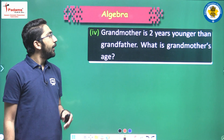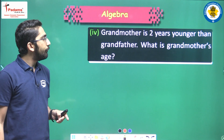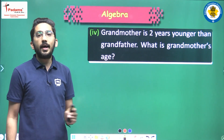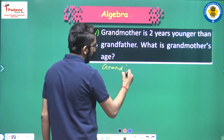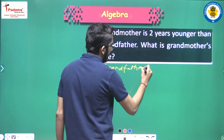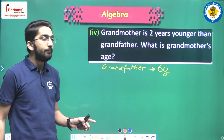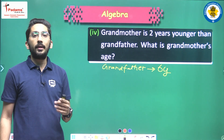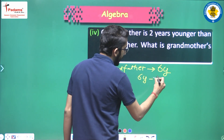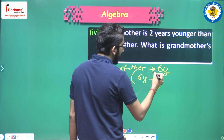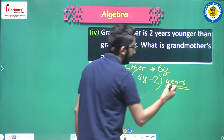Grandmother is two years younger than grandfather. What is grandmother's age? Grandmother is two years younger than grandfather, and grandfather's age we already found — it was six y. So grandmother is two years less than that, which gives us six y minus two years.